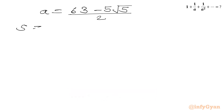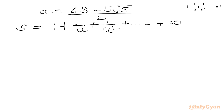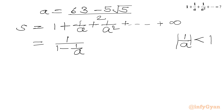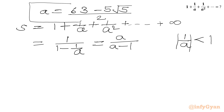So S equals 1 plus 1 over a plus 1 over a squared, up to infinity. By the geometric series formula, S equals first term over (1 minus common ratio), giving 1 over (1 minus 1/a), where 1/a is less than 1. Simplifying, S equals a over (a minus 1).